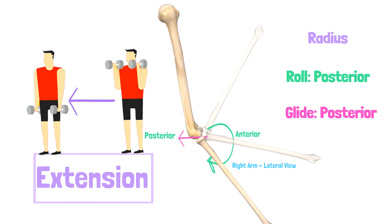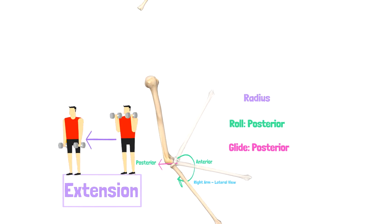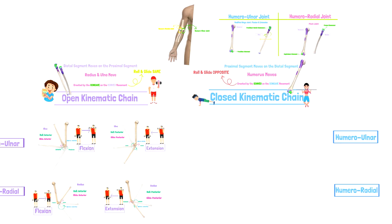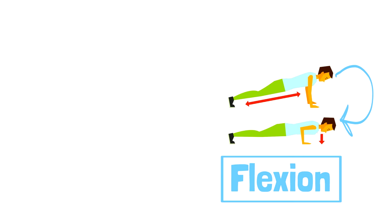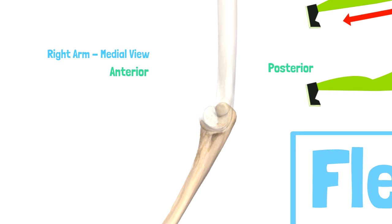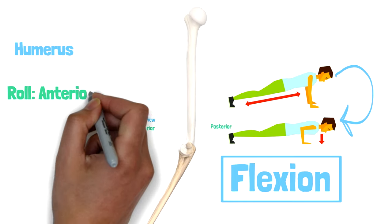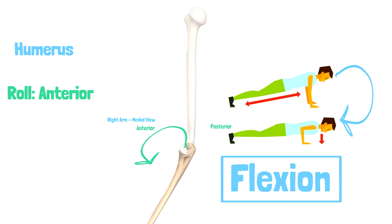Now let's take a look at the closed kinematic chain movement and examine humeral ulnar arthrokinematics. Flexion is the first osteokinematic movement we will look at. Since we observe a convex trochlea moving on a concave trochlear notch, the roll and the glide will occur in opposite directions. With flexion, observe the humerus roll and glide posteriorly.